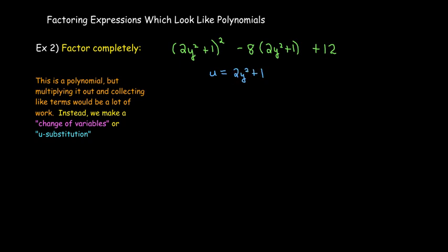So if I put any place I see a two y squared plus one, I put a u, then I'll get a much simpler polynomial to factor. I'll have u squared minus eight u plus twelve. This is just one of our simple trinomials, and so I would need two numbers whose product is positive twelve and whose sum is negative eight.